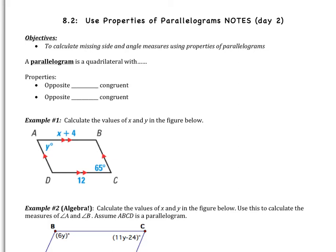Welcome geometers to the second section of chapter 8. Today we are jumping into properties of parallelograms. This is going to be the basis for the rest of the chapter. We're going to learn about parallelograms, more specific types of parallelograms, and some other quadrilateral shapes. Today's objective is to calculate missing side and angle measures using properties of parallelograms. We're probably going to learn some properties and then apply them.